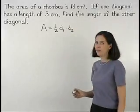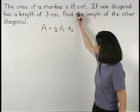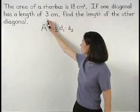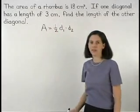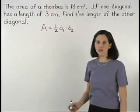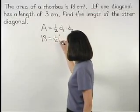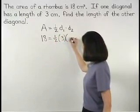We're given that the area of the rhombus is 18 square centimeters and one of the diagonals has a length of 3 centimeters. So we can set up the equation 18 equals 1 half times 3 times d2.